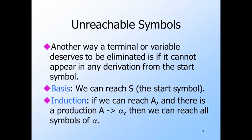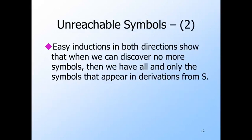In addition to eliminating variables that don't derive anything, we need to eliminate variables that derive some terminal strings but cannot be derived from the start symbol. The algorithm to find symbols — both terminals and variables — that appear in derivations from the start symbol is another example of a discovery algorithm. For the basis, obviously the start symbol can be derived in zero steps from itself. For the induction, suppose that we have discovered that we can reach variable A. For every production with body alpha and head A, we can also reach all the symbols appearing in alpha — the terminals and variables that appear there. It is an easy pair of inductions to show: first, that if we discover a symbol by this algorithm, then it appears in a sentential form derivable from the start symbol; second, that if we do not discover a symbol, then there is no derivation from the start symbol in which it appears.